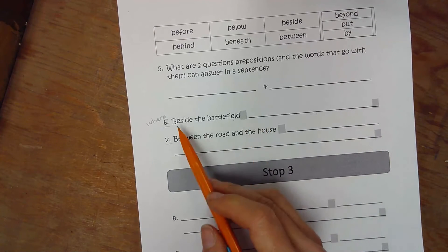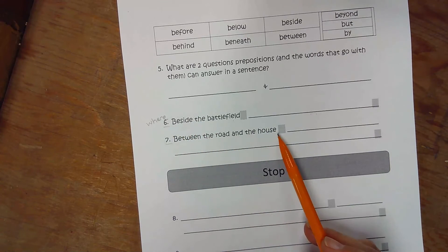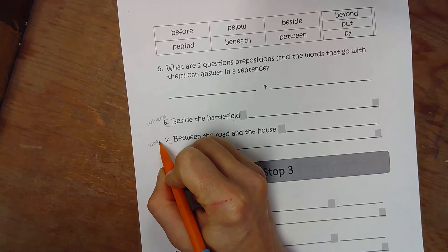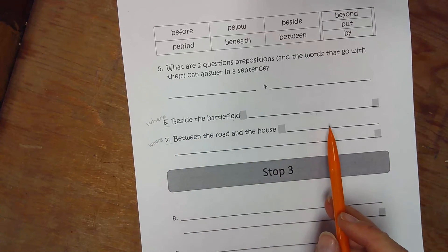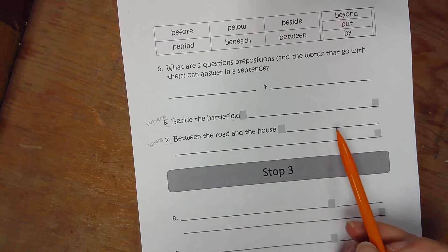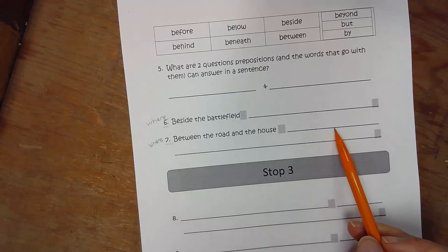Not capitalized though, because the beginning of the sentence is back here. Between the road and the house, again the preposition at the beginning is telling where. You have to say the action that happened in this place. So between the road and the house, my brother tackled me and made me roll down the hill. That would be action that happened in this place.